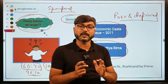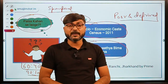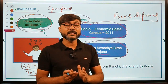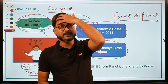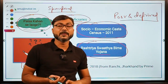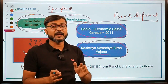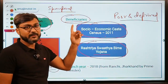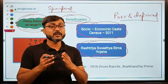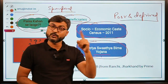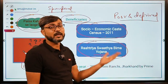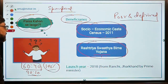Since the scheme targets poor and deprived households, the SECC 2011 is used as the basis for identification because it surveys economic conditions. Both urban and rural poor and deprived households, whether identified through SECC or previously under RSBY, are covered and subsumed into Ayushman Bharat.